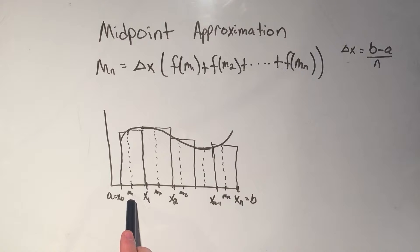So m1 is the middle point between x0 and x1, or it's the average of x naught and x1. And m2 is the average of x1 and x2.